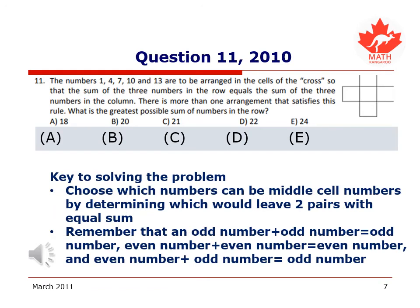The key to solving this problem is to choose which numbers can be in the middle cell by determining which would leave two pairs with equal sum. Basically, take one of the five numbers out. Do the remaining four numbers allow for two pairs to be made where the pairs have equal sums? An important skill to remember here is that an odd number plus an odd number equals an even number, an even plus an even equals an even number, and an even plus an odd equals an odd.